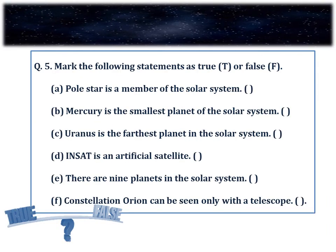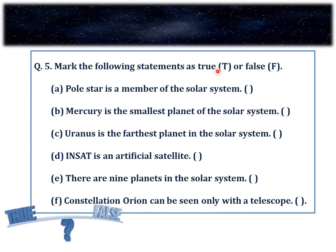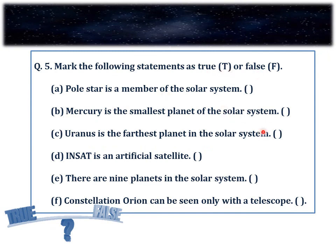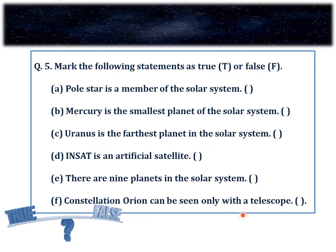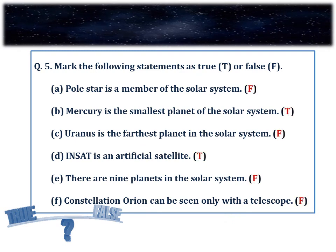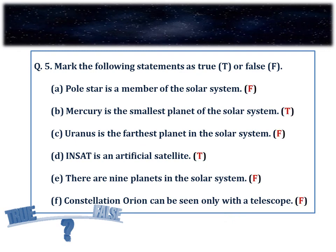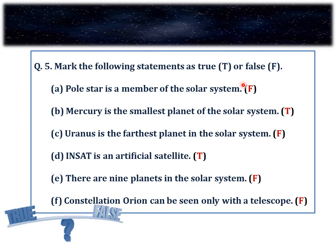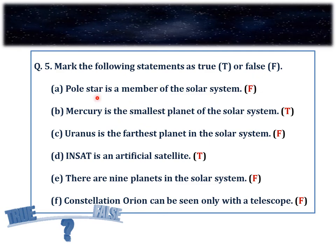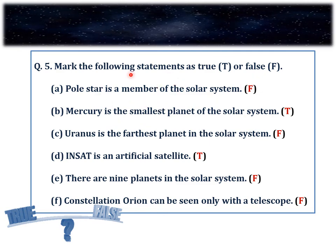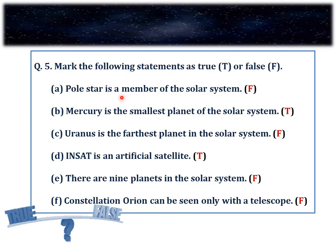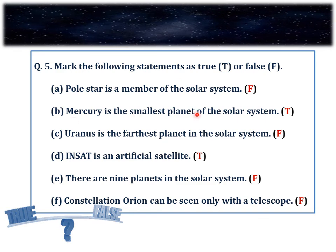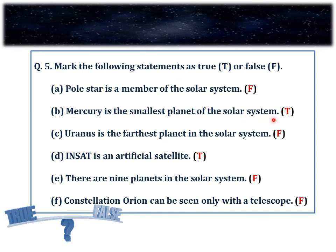Question number 5. Mark the following statements as true or false. A. Polestar is a member of the solar system — False, because Polestar is not a member of the solar system. B. Mercury is the smallest planet of the solar system — True.